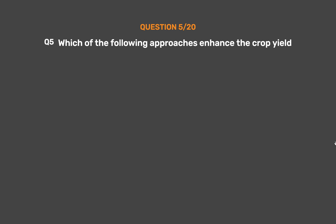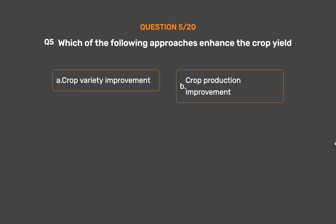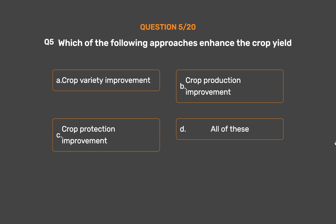Question No. 5. Which of the following approaches enhance the crop yield? Option A: Crop variety improvement. Option B: Crop production improvement. Option C: Crop protection improvement. Option D: All of these.